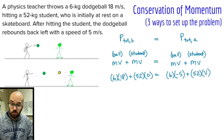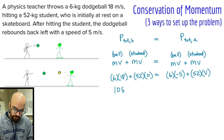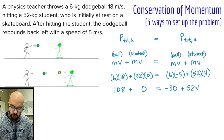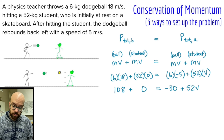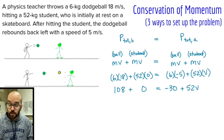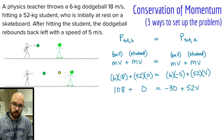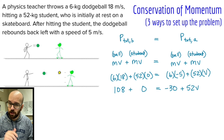We have one equation and one variable. Six times 18 is 108, plus 52 times zero is zero, equals six times negative five which is negative 30, plus 52V. If you want to find the change in momentum, it's helpful to write it out as 108 plus zero equals negative 30 plus 52V rather than plugging everything into a calculator at once.